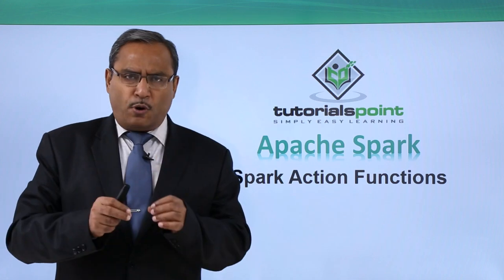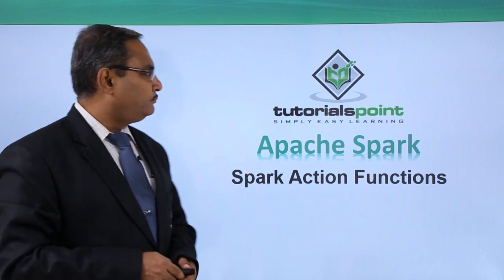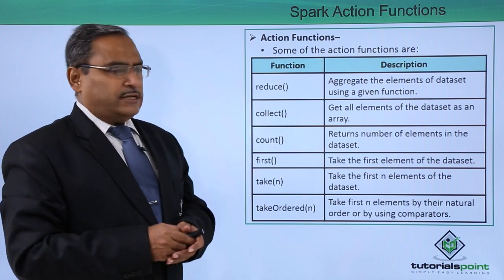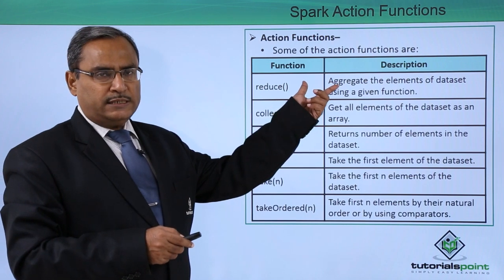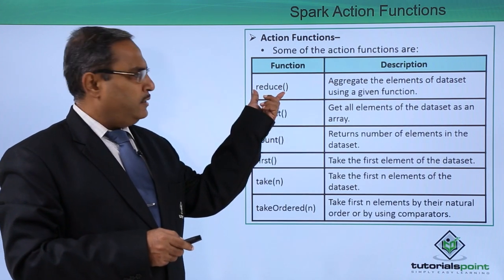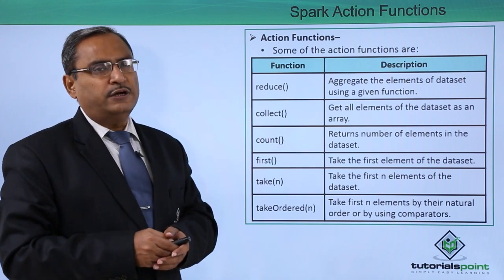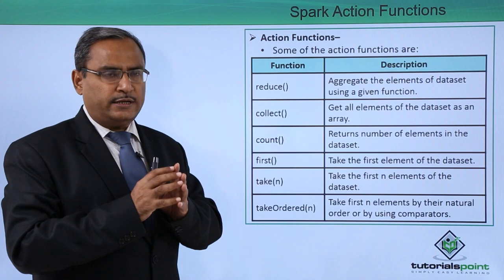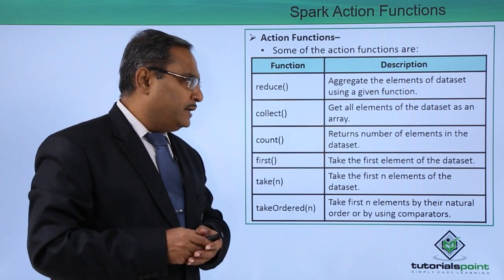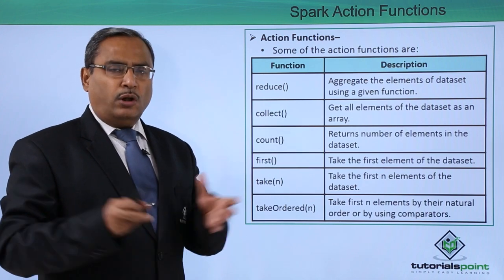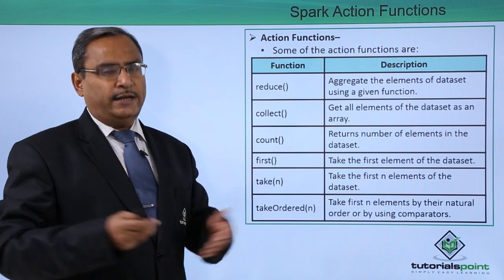Let us discuss some of the very important and frequently used functions in action. The reduce function aggregates the elements of the dataset using a given function — it will go on doing the aggregation of the dataset. Next, the collect function gets all elements of the dataset as an array, so all elements of the dataset will be converted to an array as the output.